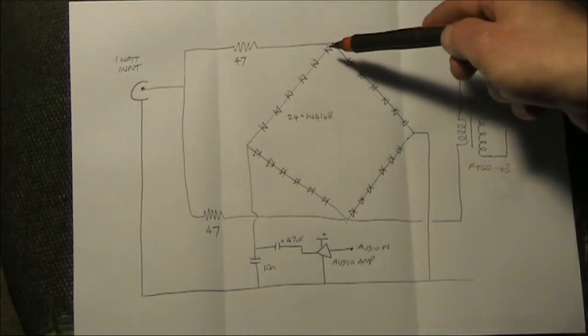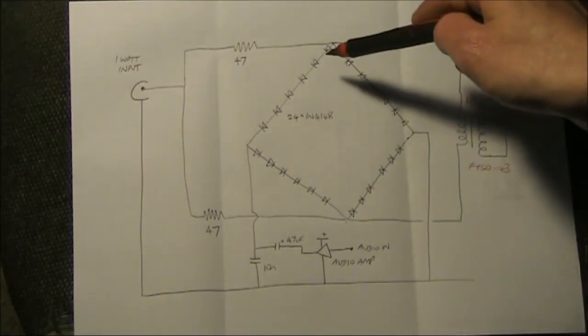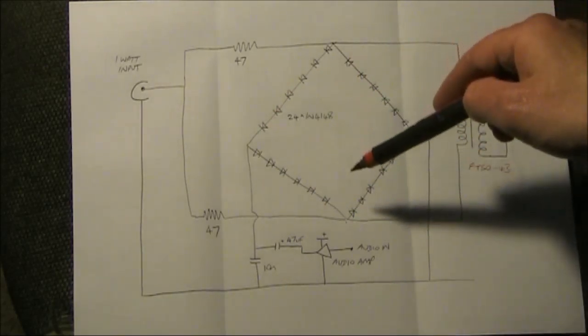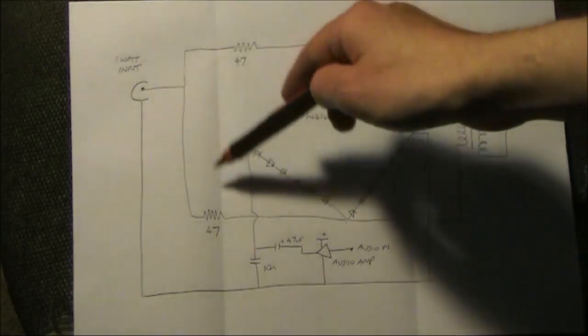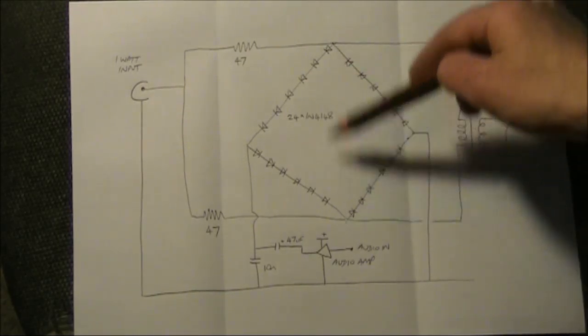So all the diodes are all facing that way, that way, that way, and that way. So it's almost like the symbols are chasing one another. The signal from the transmitter is applied to opposite sides of the diode square.